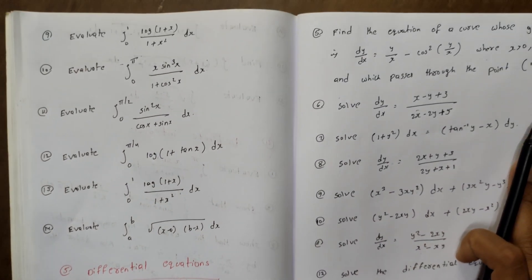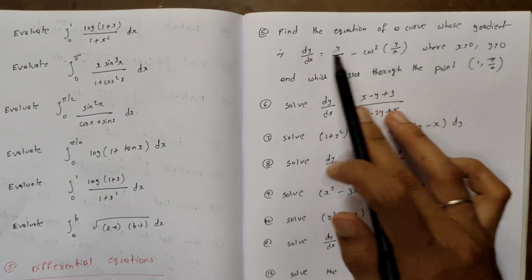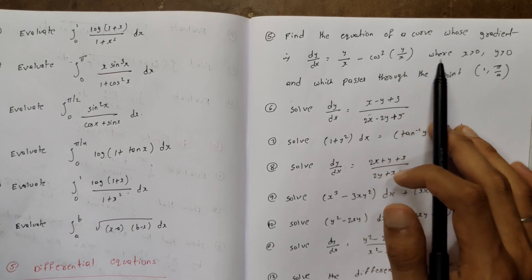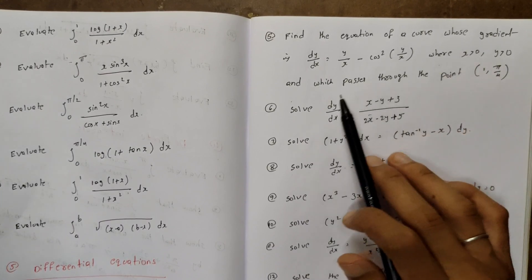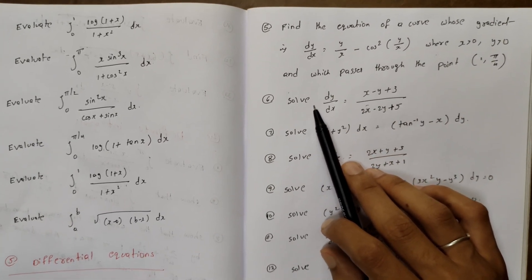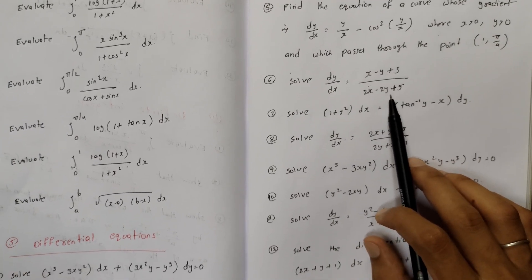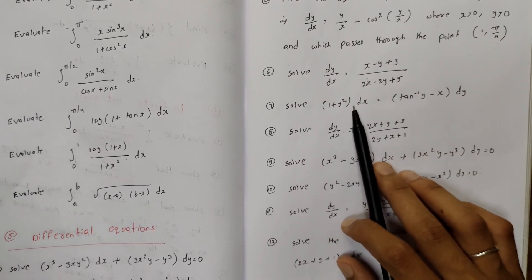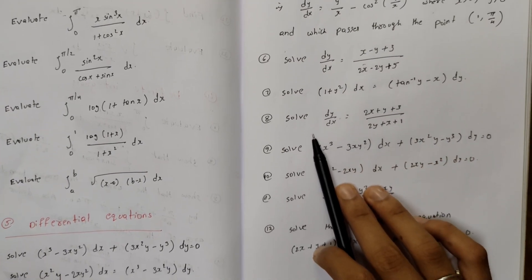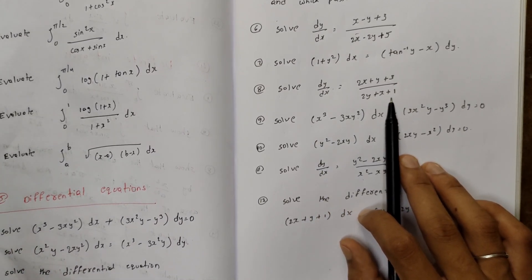Find the equation of the curve whose gradient dy/dx = y/x - cos²(y/x), where x>0, y>0, passing through (1, π/4). Solve dy/dx = (x-y+3)/(2x-2y+5). Solve (1+y²)dx = (tan⁻¹y - x)dy. Solve dy/dx = (2x+y+3)/(2y+x+1).